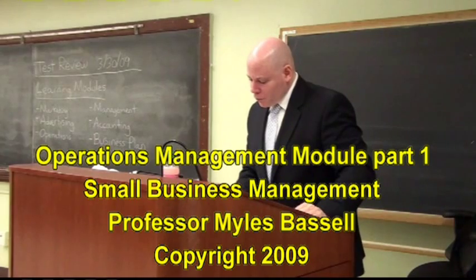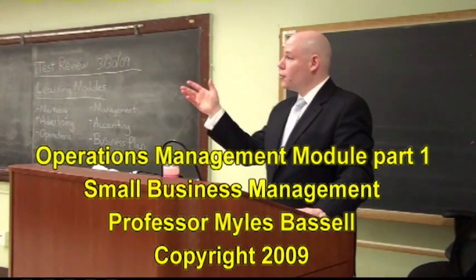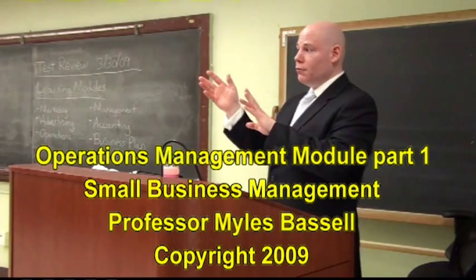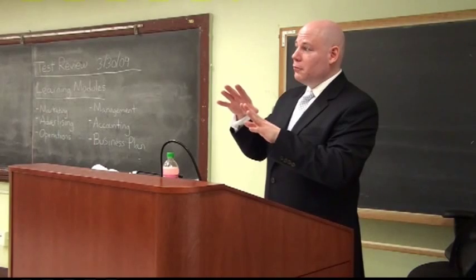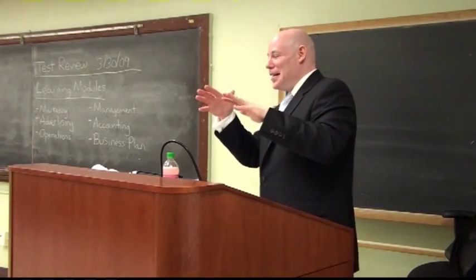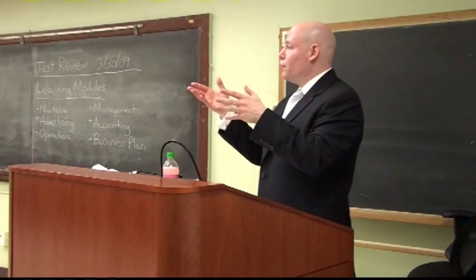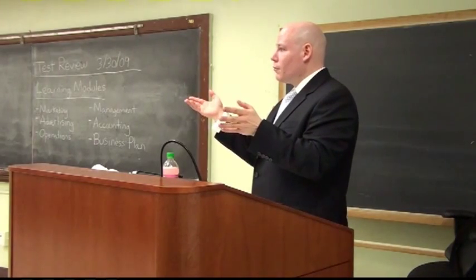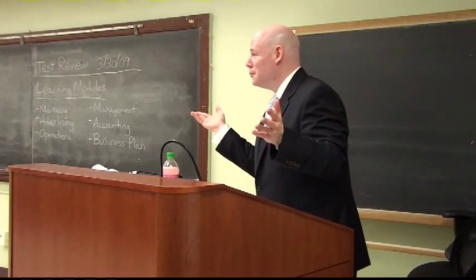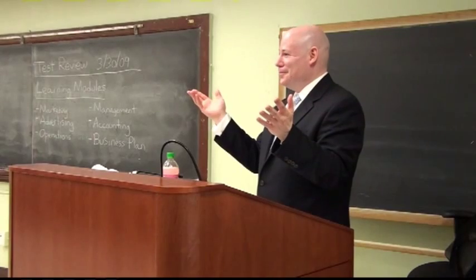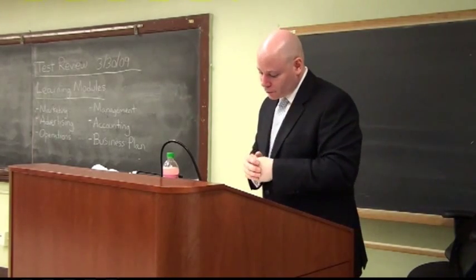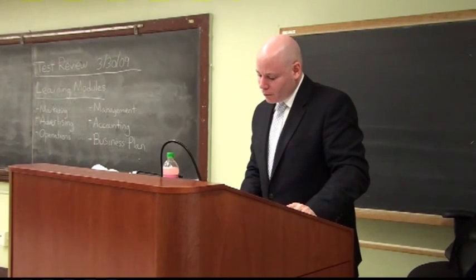The first is the design of the product, and the product could either be a good or a service. There are two types of goods: a durable good and a non-durable good. The non-durable good is generally referred to as a consumable, such as food, beverages, shampoo, hand cream, or cocoa butter. Those are considered to be consumables.